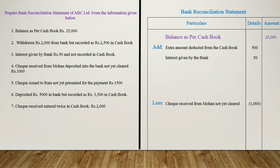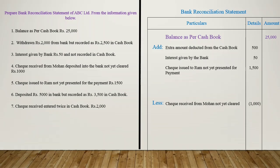The fifth transaction is: Check issued to Ram, not yet presented for payment: Rs. 1500. ABC Limited issued a check to Ram and assumed Ram had presented it for payment, so it already deducted Rs. 1500 from the Cash Book. But when ABC Limited checked the Passbook, it found the check was still not presented for payment. Therefore, it has to reverse the transaction in the Cash Book and add back the Rs. 1500. Therefore, add check issued to Ram not yet presented for payment: Rs. 1500.